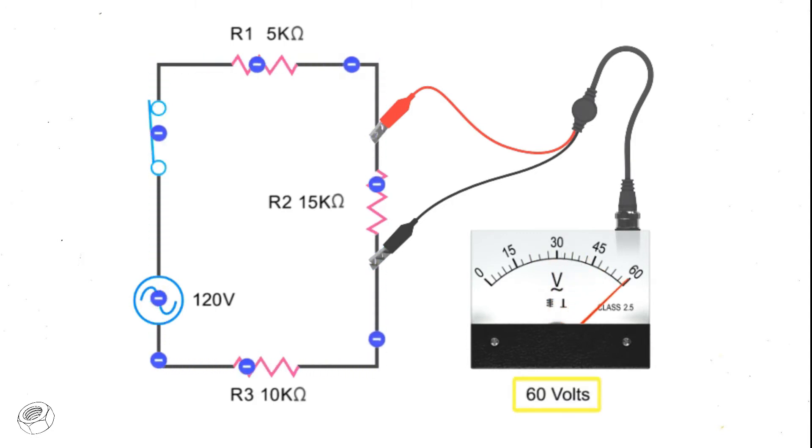To accurately measure voltage, it's important that the meter have a negligible impact on the circuit being measured. Therefore, voltmeters have a high internal resistance to prevent current from flowing through the meter. Connecting them to a component will not affect the voltage being measured.